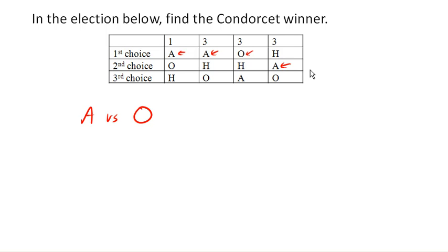So A would have 1, 2, 3, 4, 5, 6, 7 people liking A. Whereas O only has 3 people preferring it over the other option. Now, again, we're looking at a one-on-one comparison here. So in this comparison, A would be the preferred choice.